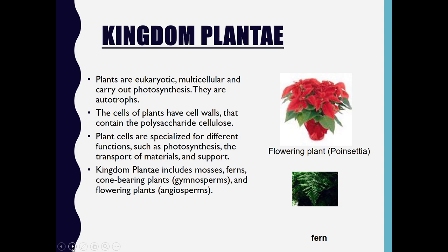Coming to the next kingdom, Plantae: all plants come under this kingdom. They are eukaryotic, multicellular, and carry out photosynthesis, so they are all autotrophs. The cells of plants have cell walls containing cellulose. Plant cells are specialized for different functions such as photosynthesis, transport of materials, and support. Kingdom Plantae includes mosses, ferns, cone-bearing plants also known as gymnosperms, and flowering plants known as angiosperms.